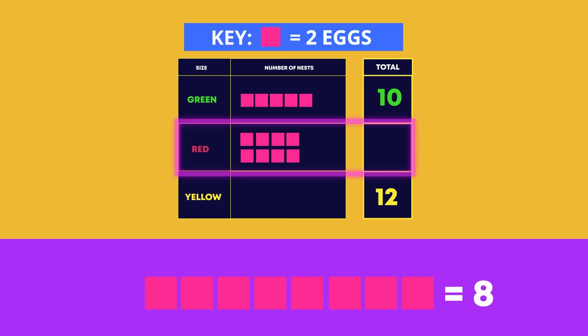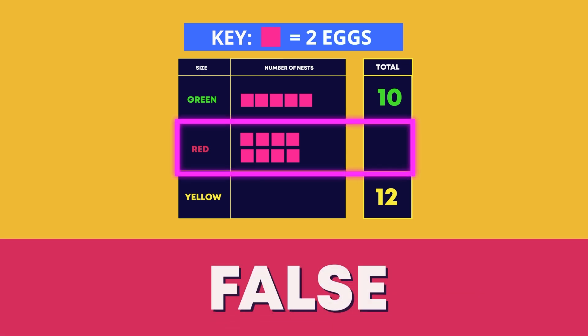There are eight red eggs altogether. False is right! Although there are eight squares, each square represents two eggs.